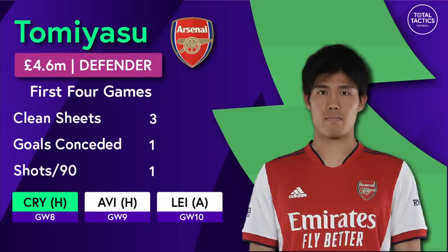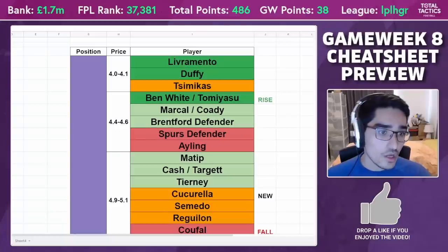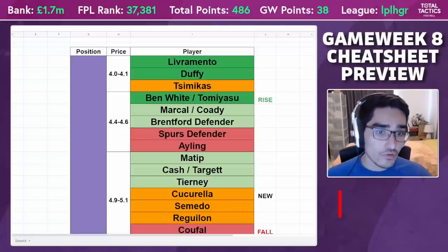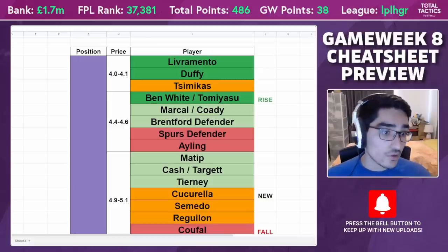Ben White and Tomiyasu have been fantastic options. Tomiyasu is a little overrated in terms of whether he'll provide attacking returns. Ben White is interesting because in games where Arsenal are under threat — like the Brighton game — he has the potential to get a good amount of bonus points. Ben White probably makes the most sense because he's cheaper and has manager favour in terms of consistent starts as long as he's fit.